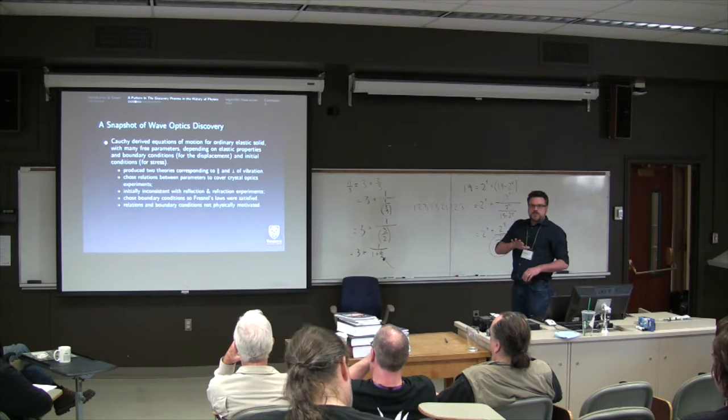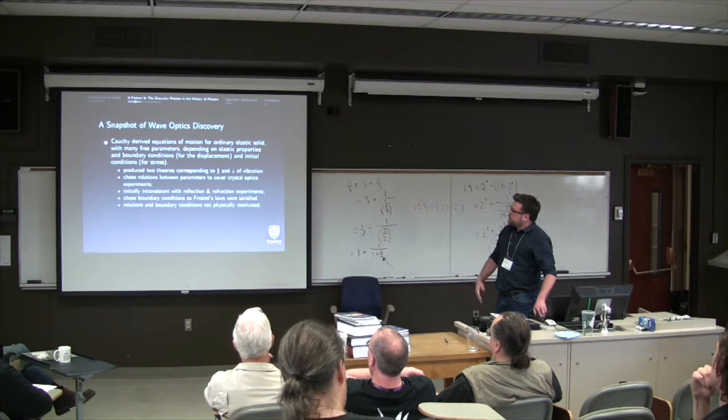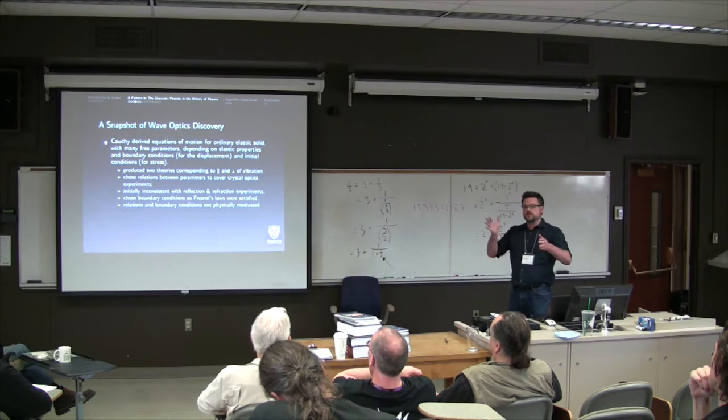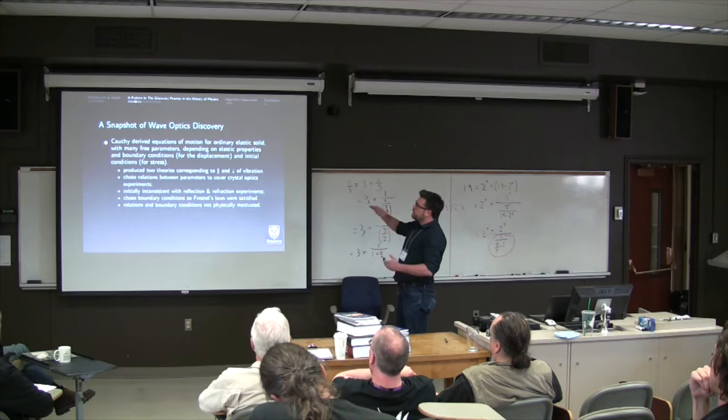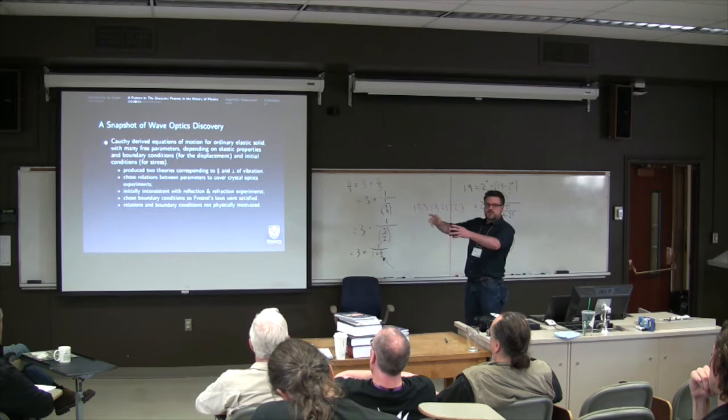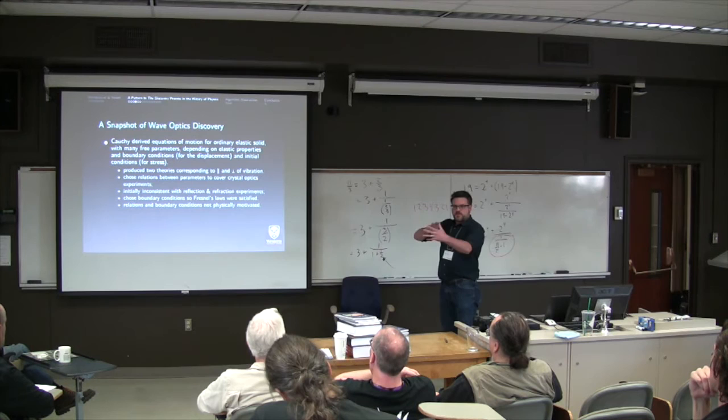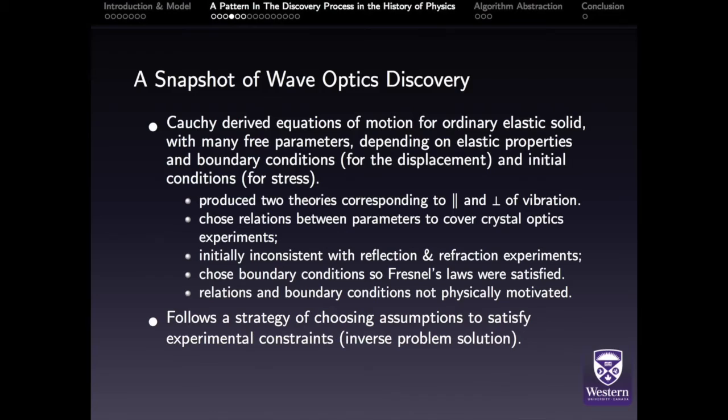But there's a kind of solution of an inverse sub-problem here by figuring out what assumptions can I make to recover the experimental results. So his laws became experimental constraints on a valid theory. So up until this point, there weren't actually equations of motions for an elastic solid, or an ordinary elastic solid. Cauchy was the one who derived them. But they had lots of free parameters, depending on various properties. So he ended up producing two separate theories, one for parallel vibration and one for perpendicular vibration, and a bunch of different sub-theories. So, again, this is the same kind of argument Fresnel was using, solving an inverse problem. What parameters can I choose to recover crystal-optic experiments? So that was his first strategy. But then the result was inconsistent with reflection and refraction experiments. So he chose weird boundary conditions to be able to recover Fresnel's laws. And then he got something that kind of fit together, but he still had these two independent theories that he couldn't decide. And the relations and the boundary conditions weren't physically motivated. They were just designed to recover the experimental data. So it follows a strategy of choosing assumptions to satisfy variable constraints. It's solving an inverse problem.